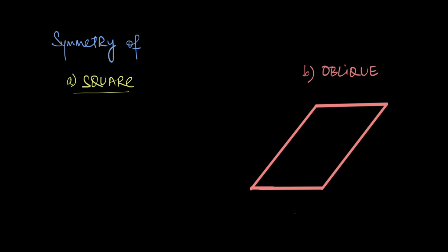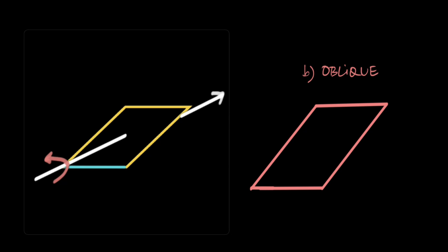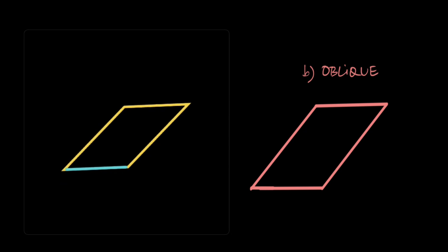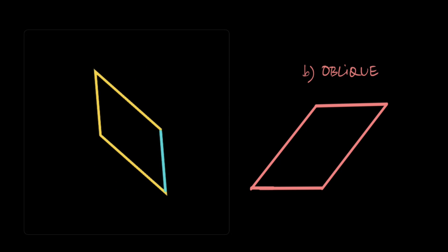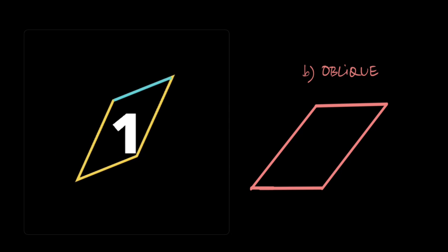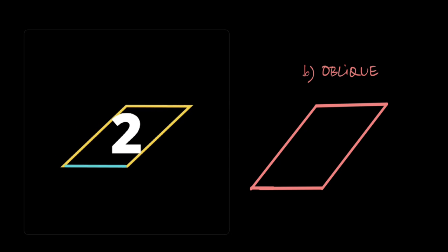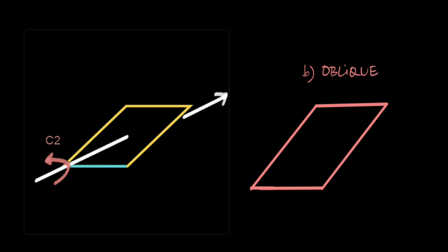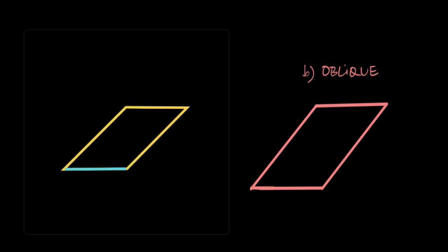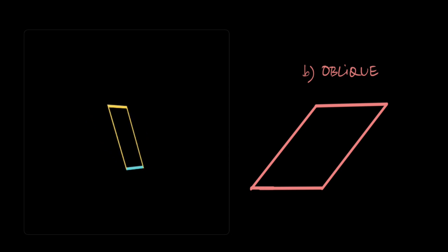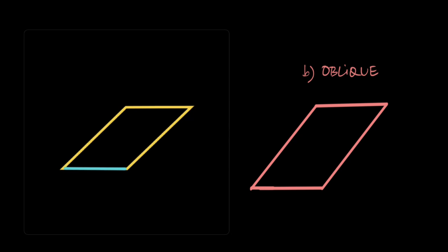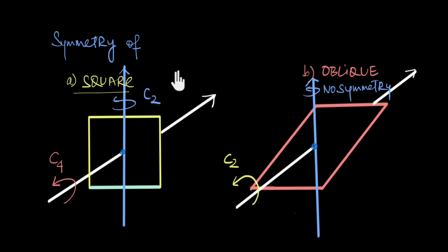What about an oblique? If I rotate the oblique by 360 degrees along this particular axis, the oblique does not repeat itself after 90 degrees. In fact, it repeats itself only after 180 degrees. So during a full 360-degree rotation around this axis, it repeats itself only two times. So in an oblique, this axis is not a C4 axis but instead a C2 axis of symmetry. Now if we try rotating the oblique around this other axis, the oblique repeats itself only after 360 degrees. Since even an asymmetrical object repeats after 360 degrees, this is not an axis of symmetry. So clearly, a square is much more symmetrical compared to an oblique.